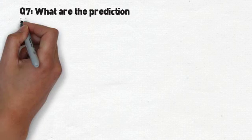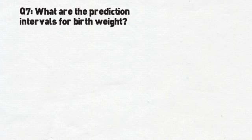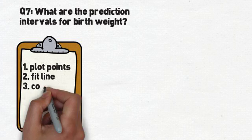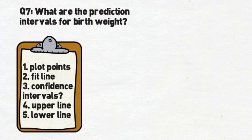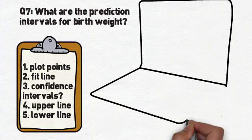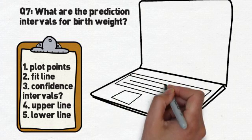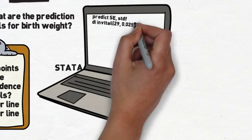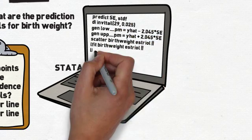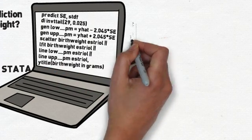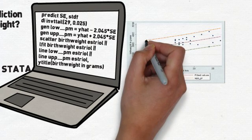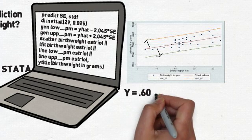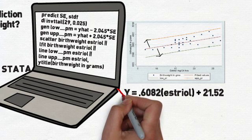Question 7 asks: what are the prediction intervals for birth weight? We'll plot all values of our dataset using the formula we've derived, fit a regression line down the middle, figure out the confidence interval for each birth weight value — how much standard error there is — and draw lines for the upper and lower confidence intervals. In Stata there is no command to generate this automatically, but Stata provides the standard error for the prediction. We compute the lower and upper values of the prediction interval for each individual value and plot them. The result is a nice band around the regression line. Since the interval is fairly narrow, our formula accurately predicts estriol level. This graph is the answer to question 7.